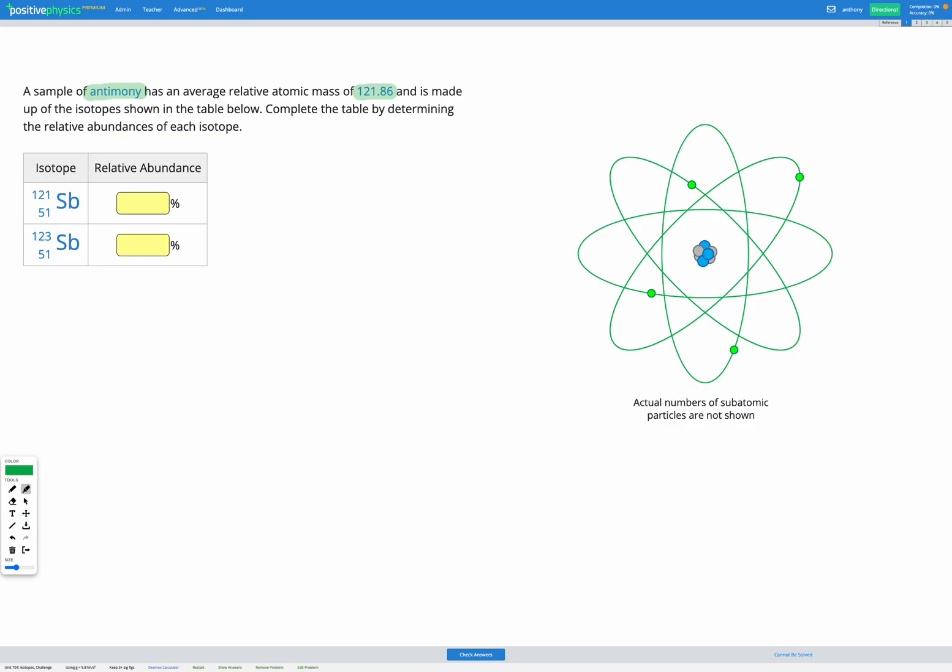So the two isotopes we have are 121 and 123. Those are our two mass numbers. So we're going to go about this question the same way we have for our other questions, but we're going to end up working backwards from the answer of the average relative atomic mass to figure out the relative abundances.